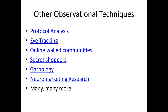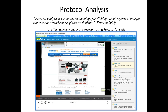Of course, there's a variety of other observational research techniques as well: protocol analysis, eye tracking studies, online walled communities, secret shoppers, garbology — where you observe the trash that people throw away to make inferences about their previous behaviors — and neuromarketing research are just some examples. Protocol analysis is a type of observational research blended with communication-based research. According to Erickson in 2002, protocol analysis is a rigorous methodology for eliciting verbal reports of thought sequences as a valid source of data on thinking. Put another way, while people are engaging in behaviors, we as marketing researchers would often like to know what's going on in their head, and a protocol analysis study is capable of eliciting those thoughts out loud.